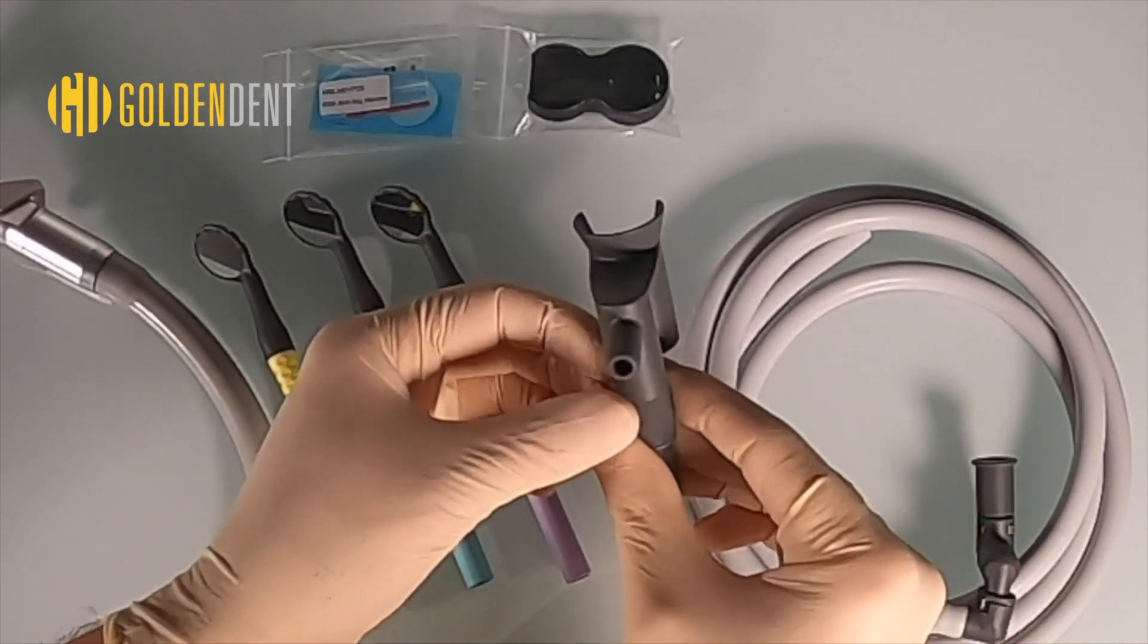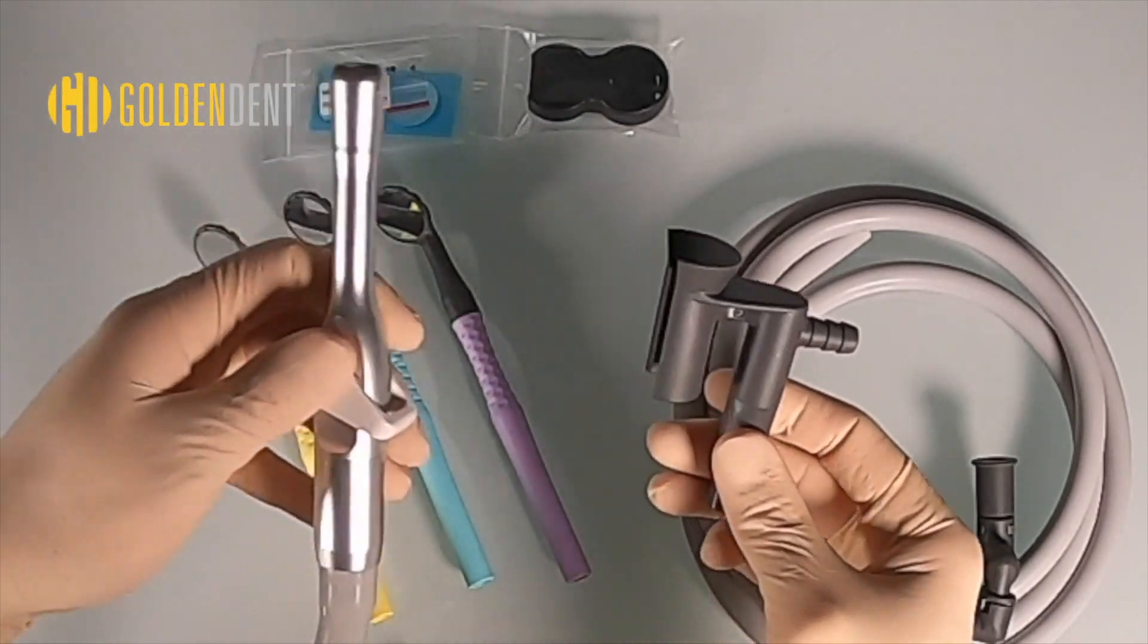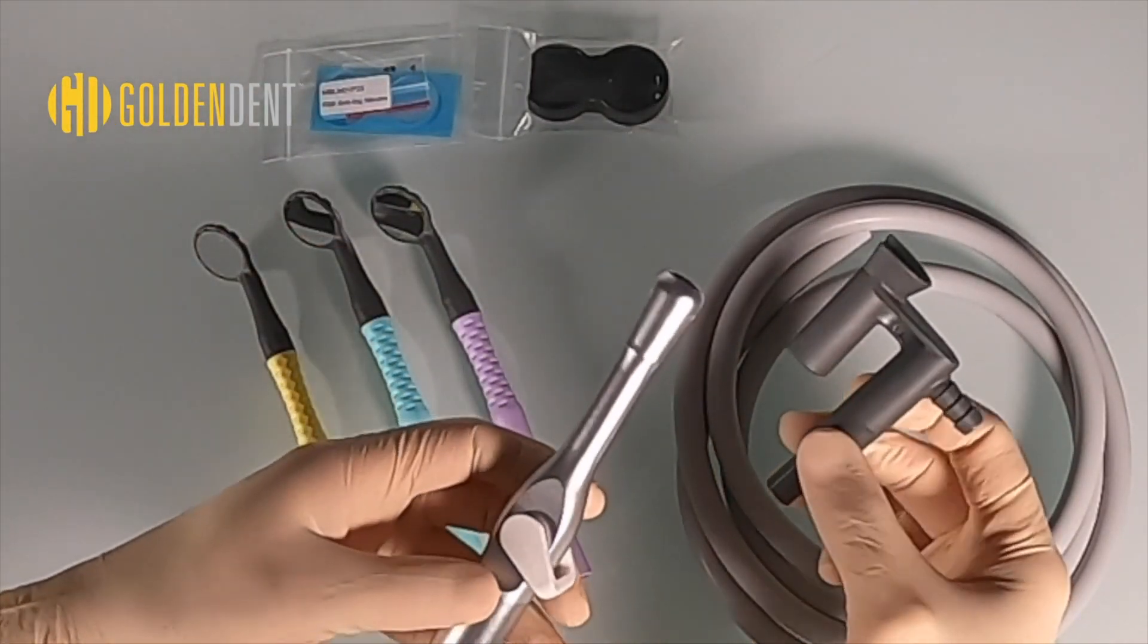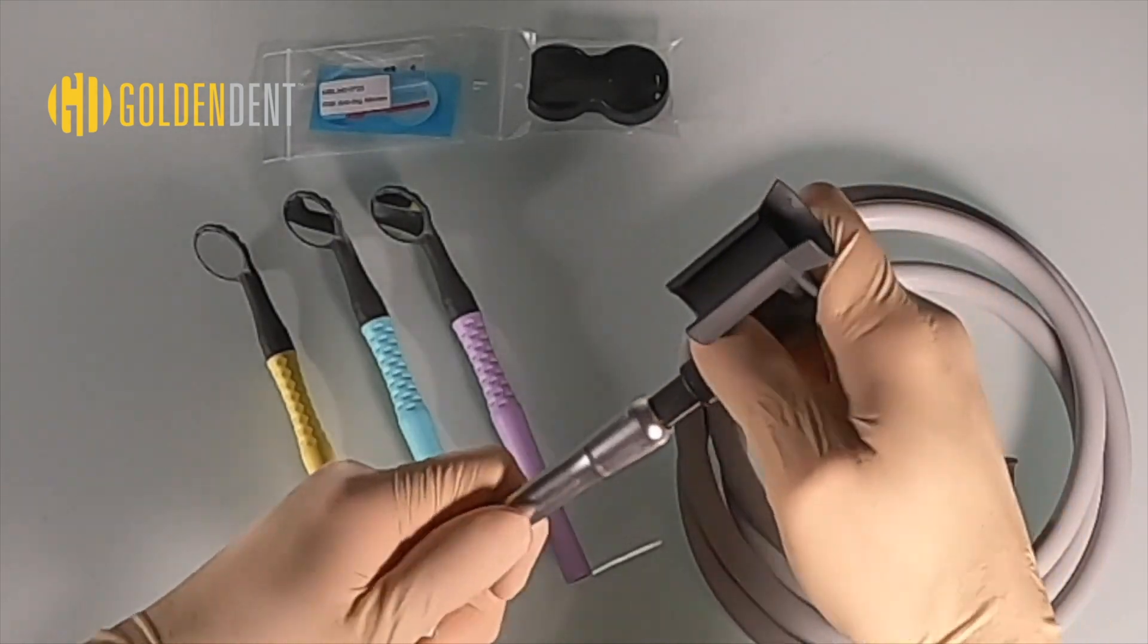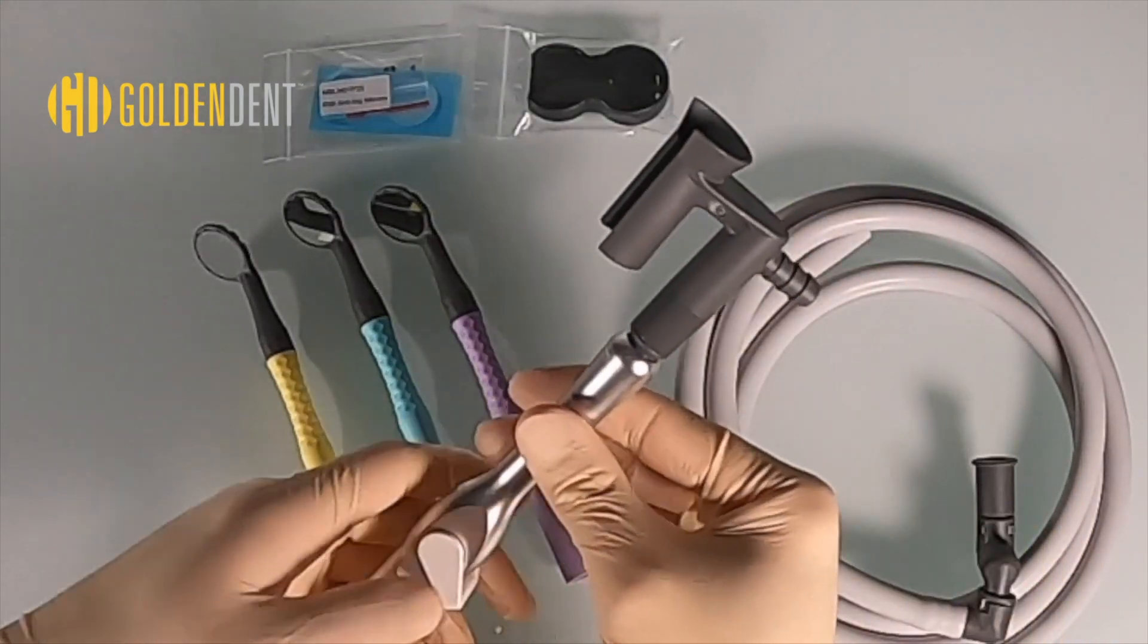This is the HVE adapter and mirror holder that slide into the top of the HVE suction. Our M7 mirror handles, tubing, and hookups are fully autoclavable.